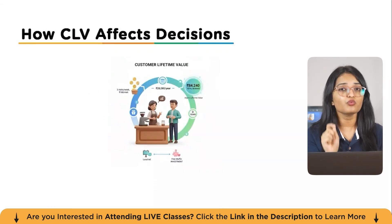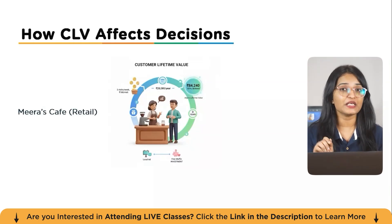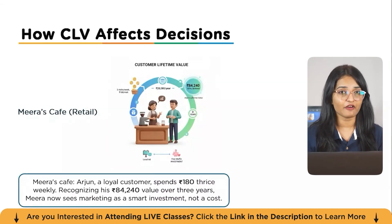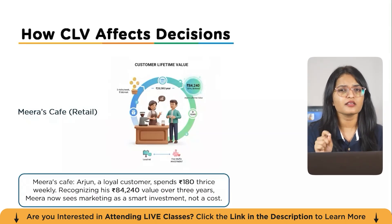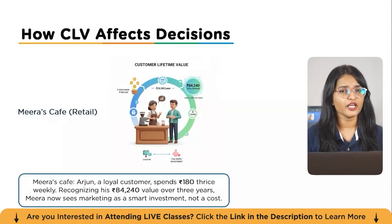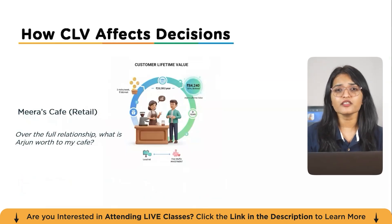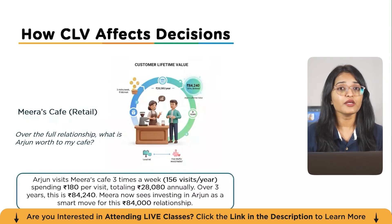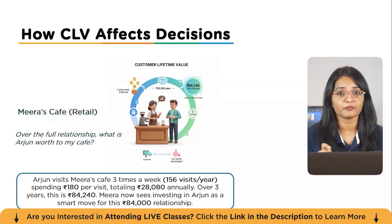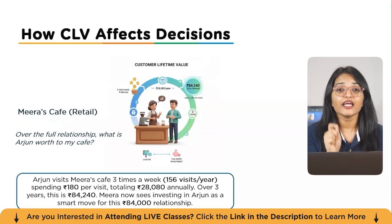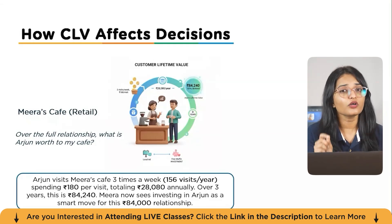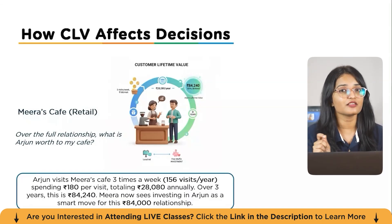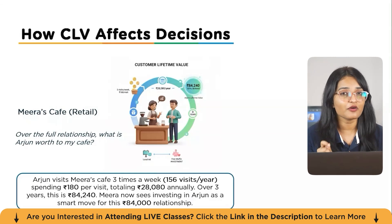Let's step into three different businesses. Meet Meera, who runs a neighborhood cafe. Her customer Arjun drops by three times a week and spends about 180 rupees each visit. Over the full relationship, what is Arjun worth? Three visits a week equals roughly 156 visits a year at 180 rupees per visit — that's around 28,080 rupees per year. If Arjun stays loyal for three years, that's about 84,000 rupees in revenue from one person. Suddenly, a small local ad or a free muffin to keep Arjun happy doesn't look like a cost — it looks like a smart investment in an 84,000 rupee relationship.